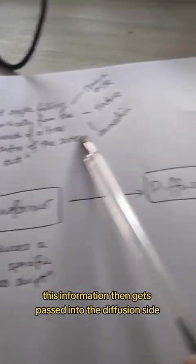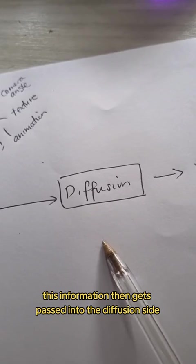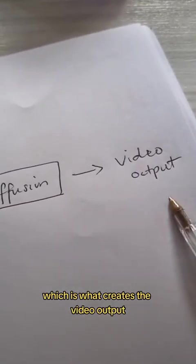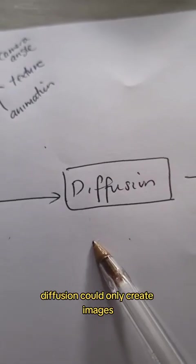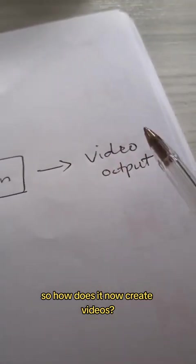This information then gets passed into the diffusion side, which is what creates the video output. Historically, diffusion could only create images. So how does it now create videos?